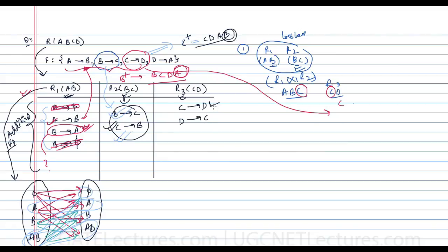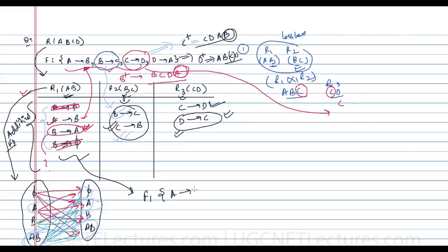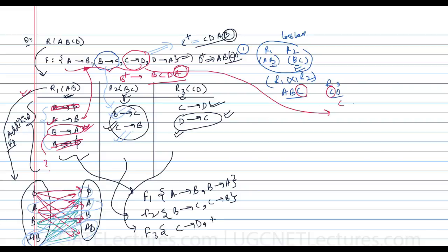For R3(C, D): C determines D is already given. To check D determines C, we take D-closure: D⁺ = {D, A, B, C}, and since C is in D⁺, D determines C is also valid. So we now have three sets: F1 = {A→B, B→A}, F2 = {B→C, C→B}, and F3 = {C→D, D→C}.